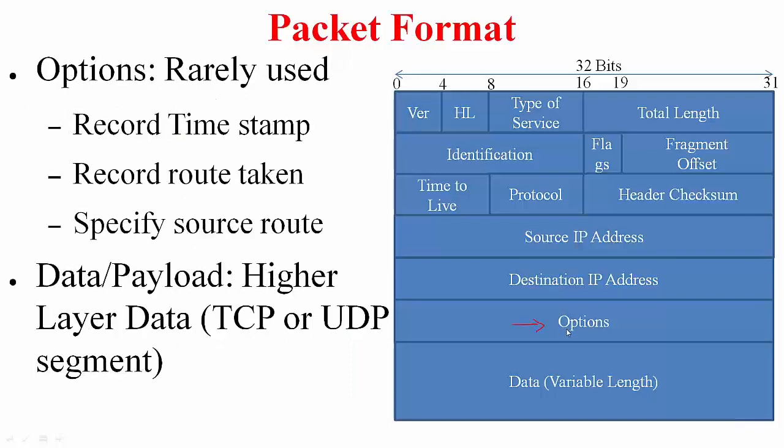Following the addresses are the options field. These are rarely used in practice but they are there in case you need them. Options can be used for example to record the time stamp, so as a packet goes through each router each router can time stamp saying I received this packet at this particular time. This can help in performance calculations like how much time a packet spent at each router, what was the round trip time, and so on and so forth.